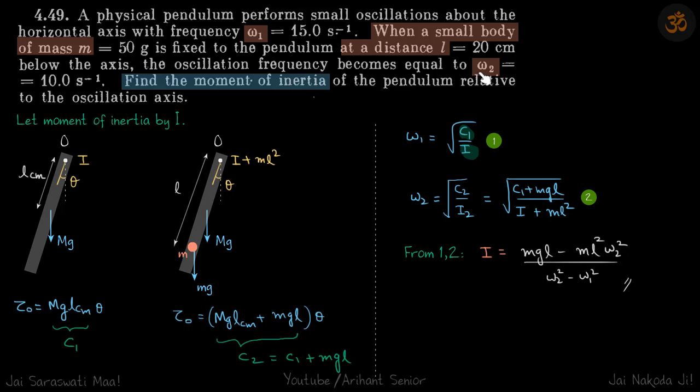So initially the frequency was omega 1, and when this body is attached at a distance L, the frequency becomes omega 2. Let's use this data to find the moment of inertia of the body, so let's say that is I.